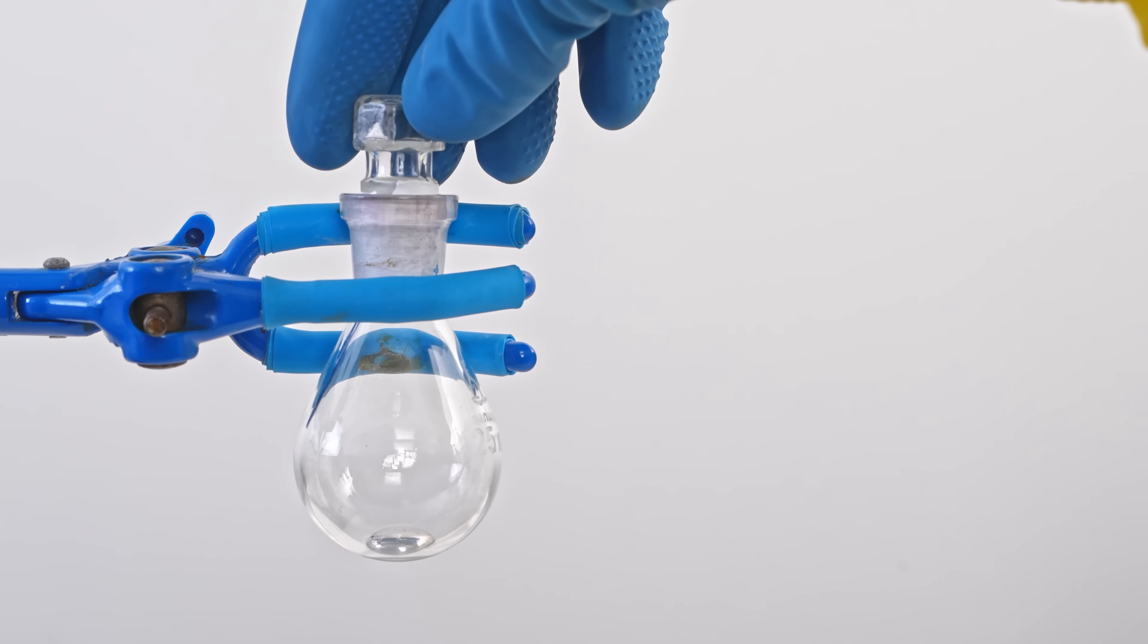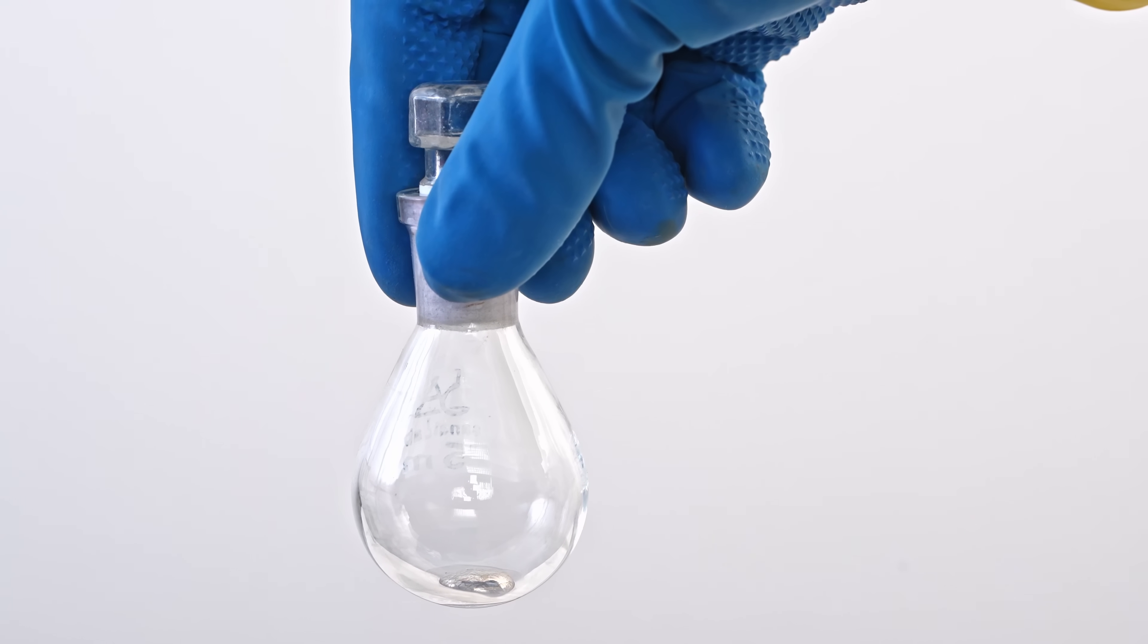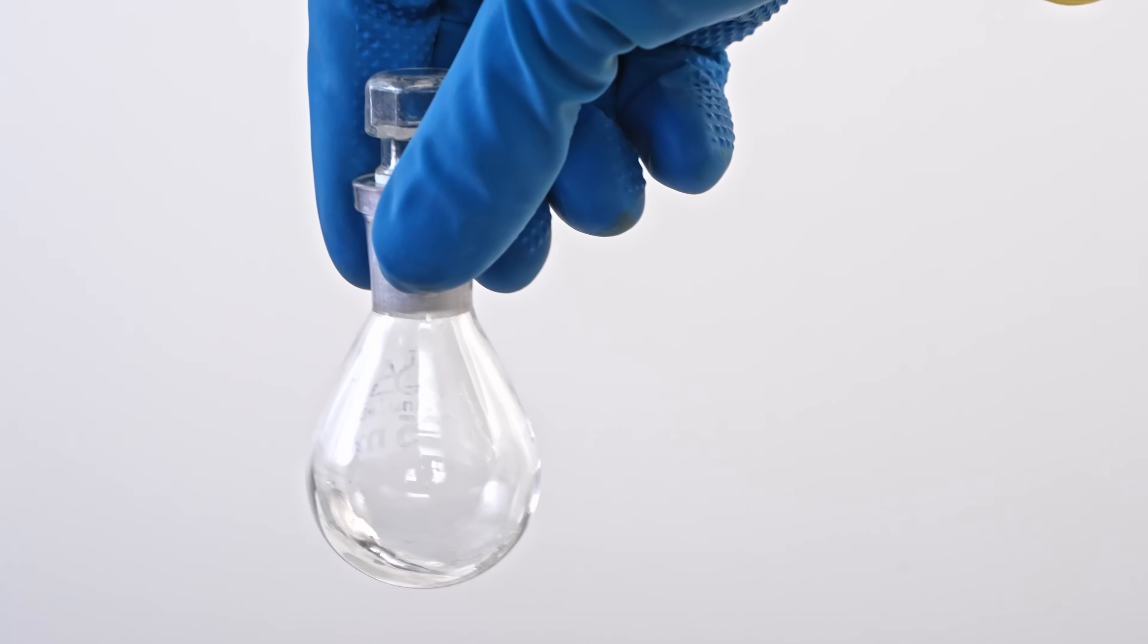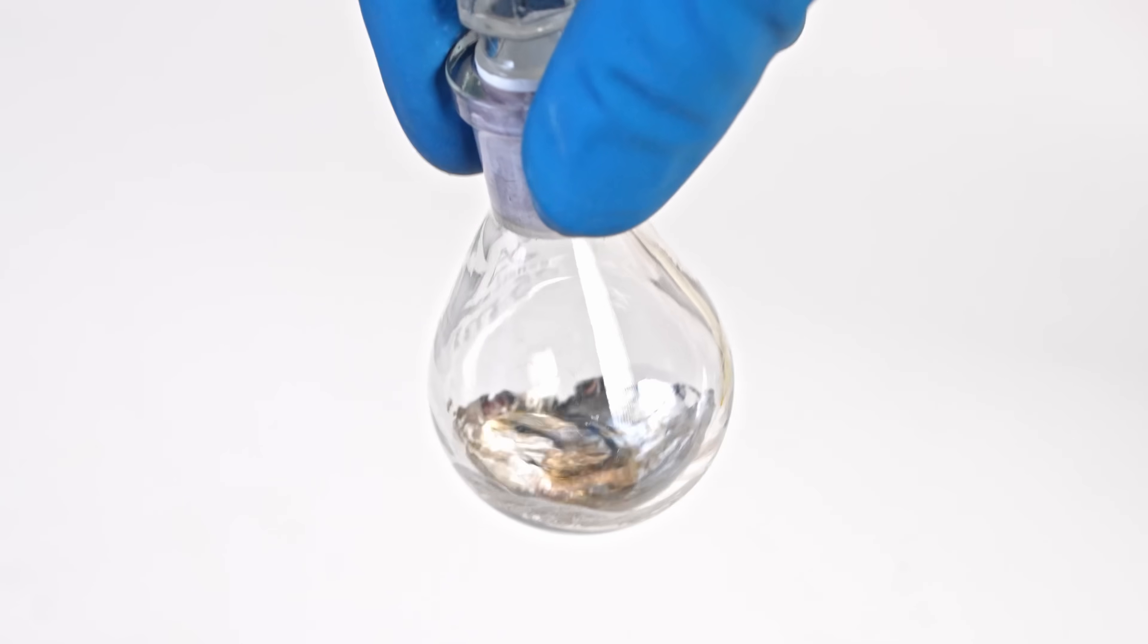Mercury has high surface tension, so it usually forms droplets instead of spreading. But after shaking the flask, the mercury wets the glass, forming a mercury mirror. Why do you think this happens? Let us know in the comments.